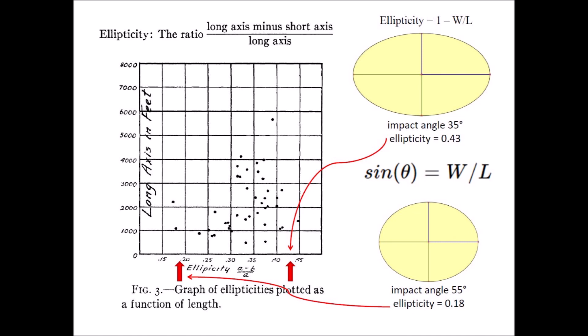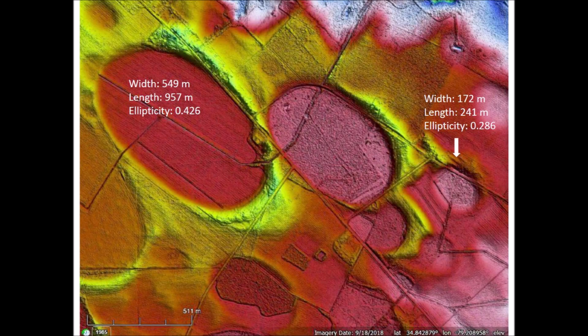The graph of the ellipticities provides the range of the elliptical features, and the width-to-length ratio of a Carolina Bay corresponds to the trigonometric sine of the angle of impact. This is a LiDAR image of some Carolina Bays in North Carolina. Here we can see the difference in ellipticity between the large bay on the left and the small bay on the right. Melton and Shriver attributed the smaller ellipticity of small bays to atmospheric friction as the meteors traveled through the Earth's atmosphere. Smaller projectiles would be slowed down more by their passage through the atmosphere than larger projectiles, and would strike the Earth at a more vertical angle.